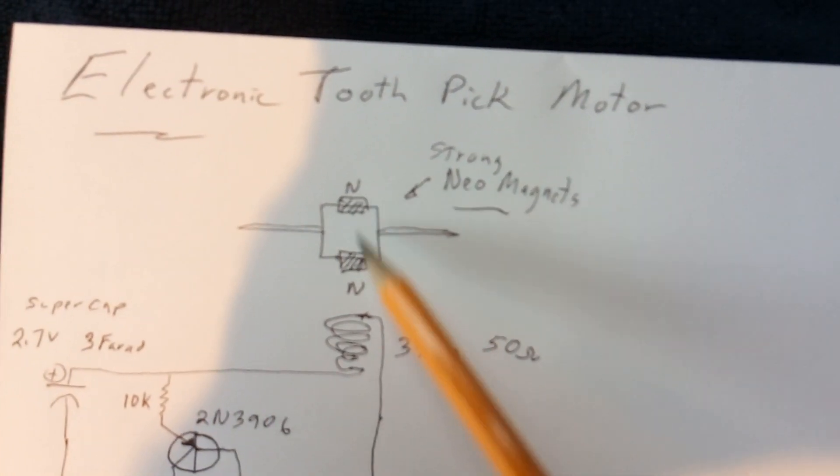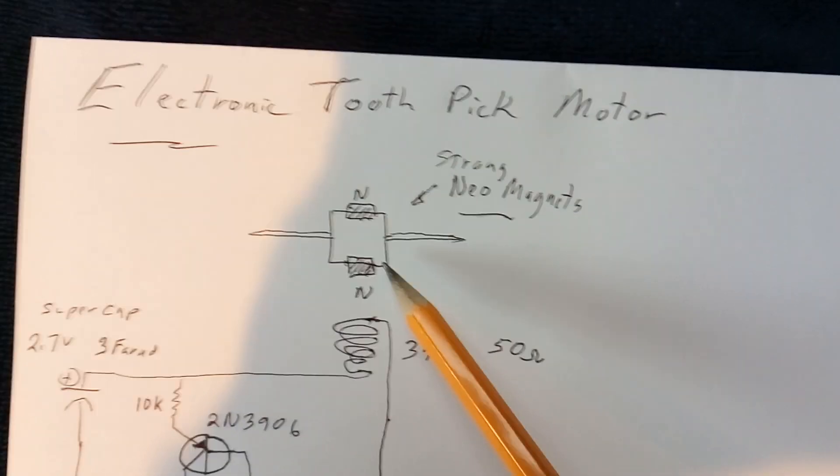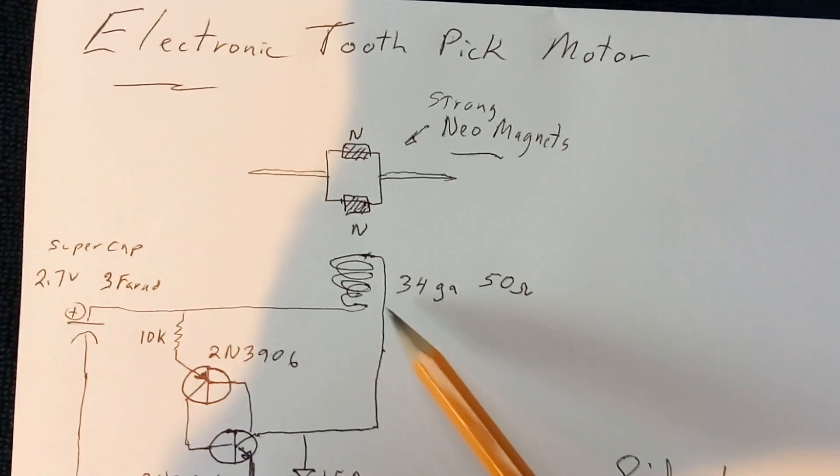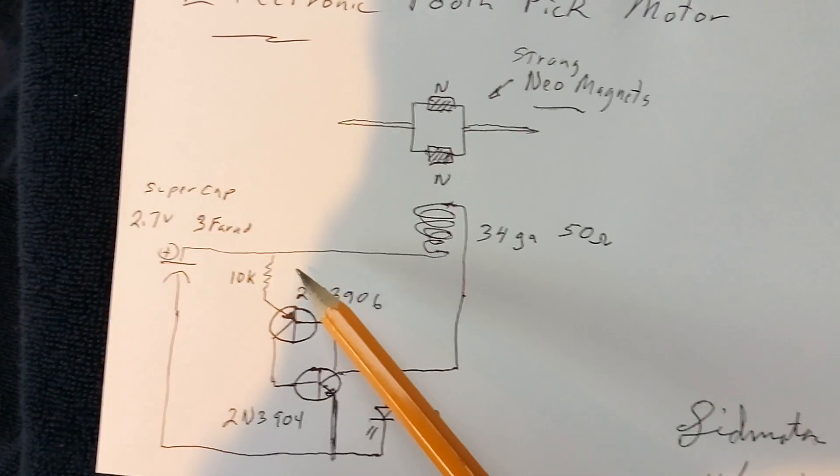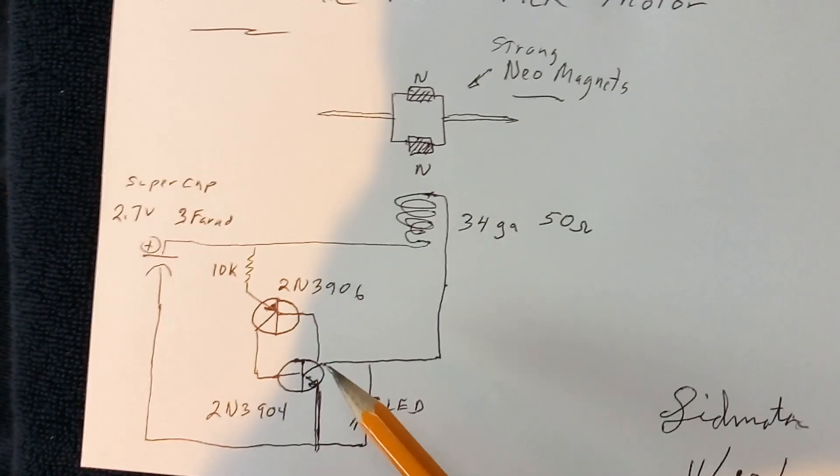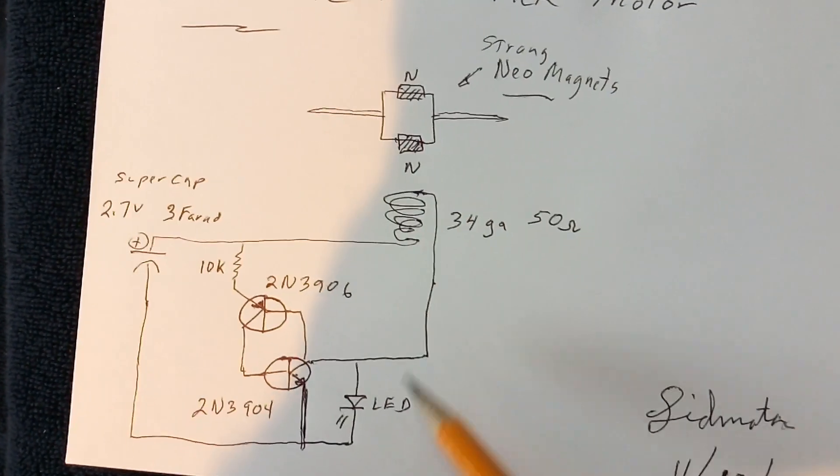The rotor is north-facing on both sides. The coil is 34-gauge, 50 ohms. I'm using a 10K resistor to feed it with, and then it triggers and the circuit goes around like this.